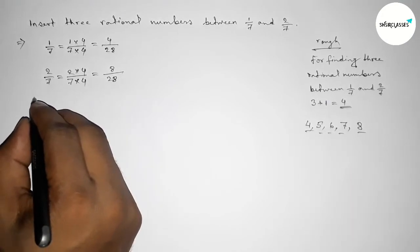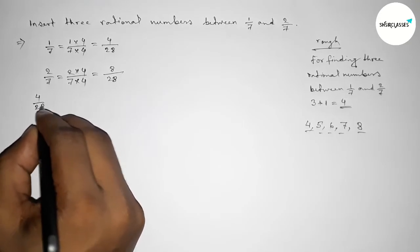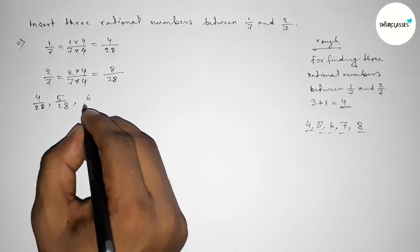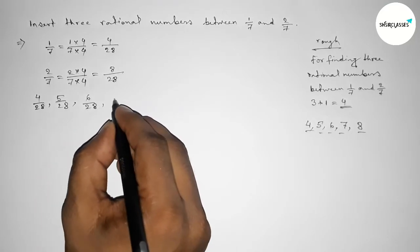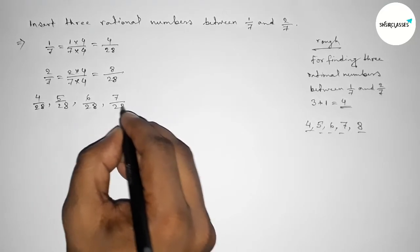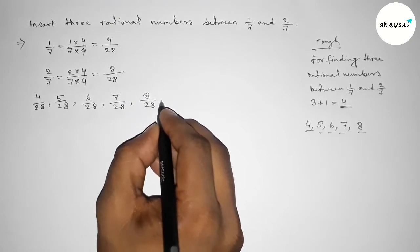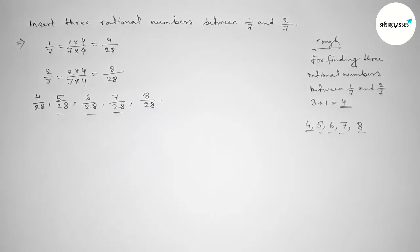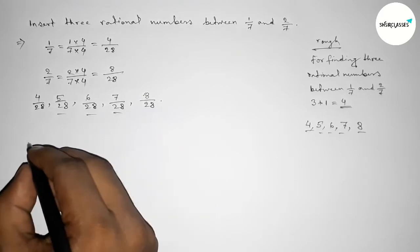Now first forming all the rational numbers here. So first one 4 over 28, 5 over 28, 6 over 28, 7 over 28, and last 8 over 28. Now between this, these are the required three rational numbers between 1 over 7 and 2 over 7.